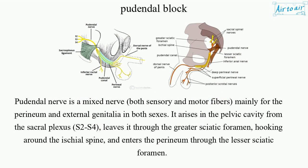The pudendal nerve is a mixed nerve, with both sensory and motor fibers, mainly for the perineum and external genitalia in both sexes. It arises in the pelvic cavity from the sacral plexus, S2–S4, leaves through the greater sciatic foramen, hooking around the ischial spine, and enters the perineum through the lesser sciatic foramen.